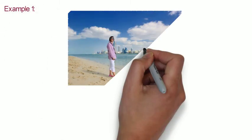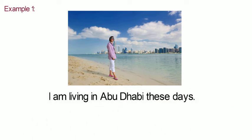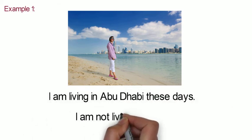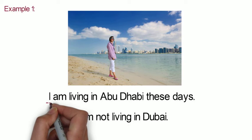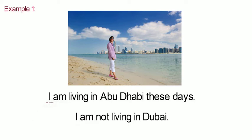Example 1: I am living in Abu Dhabi these days. I am not living in Dubai. The subject of the first sentence is I, and the verb is am living. The subject of the second sentence is also I, and the verb is am not living — it is negative. This example shows what I am doing nowadays; it shows a longer action.